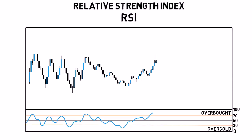There are two main ways to use the RSI. The first one is to trade the overbought and oversold regions. That is, you buy when the RSI is rising back above the 30 level and you sell when it's falling below the 70 level.